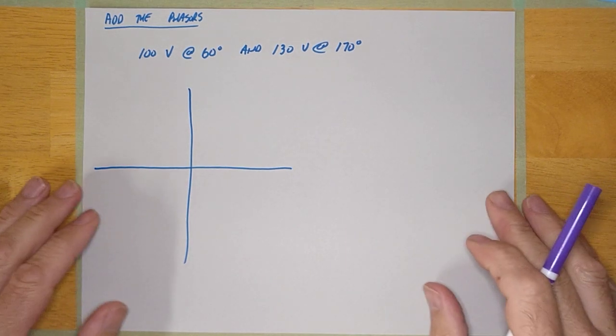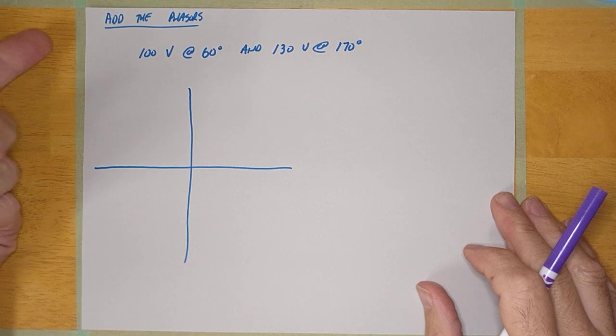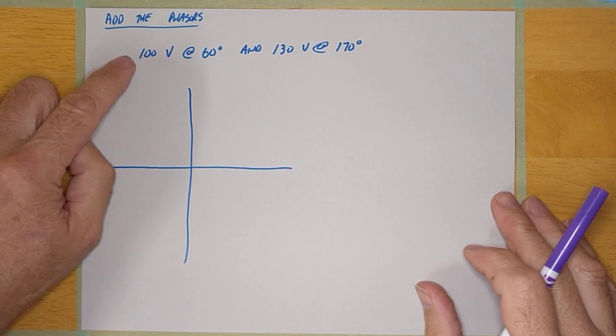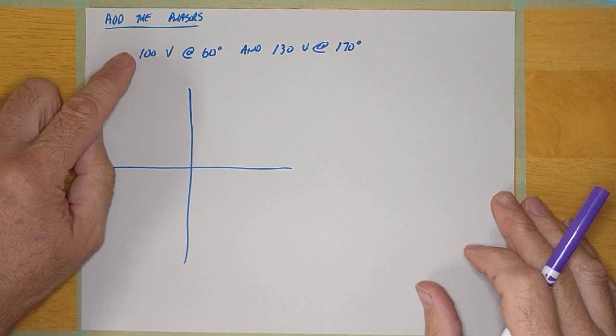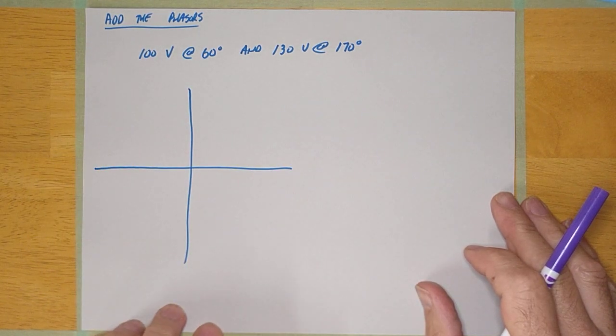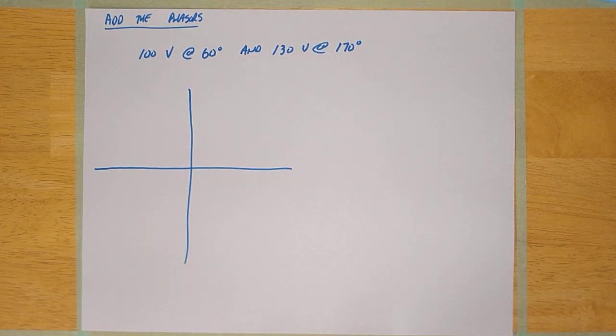Hey guys, welcome back. I'm going to continue on with adding phasers and in this particular case I've got an example here. I'm going to add these two phasers together. We've got 100 volts at 60 degrees and another one 130 volts at 170 degrees and I want to do this together with you.